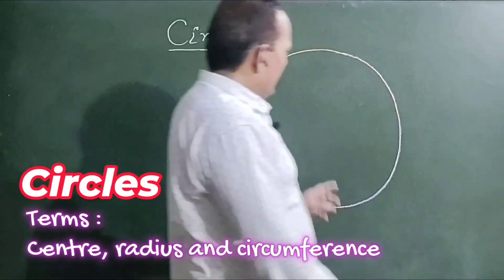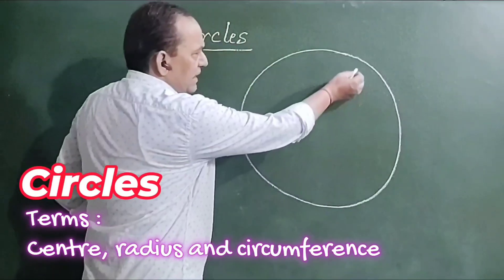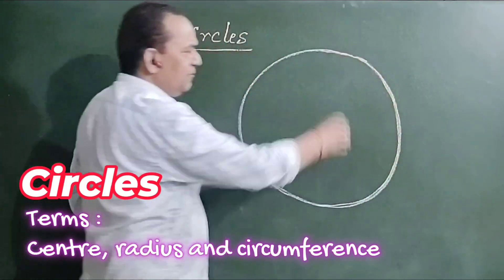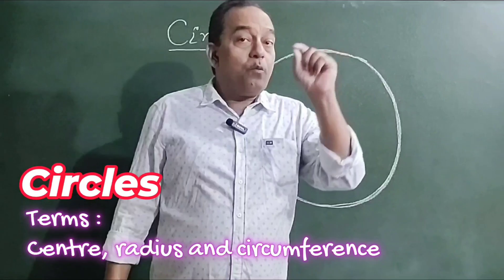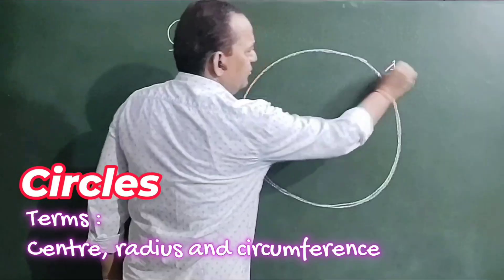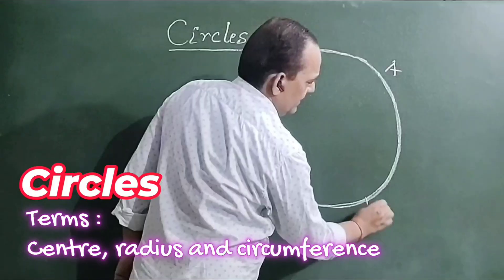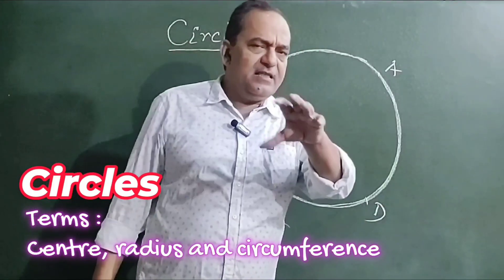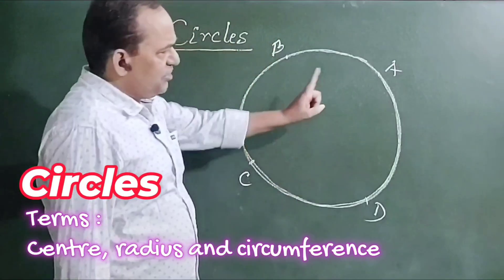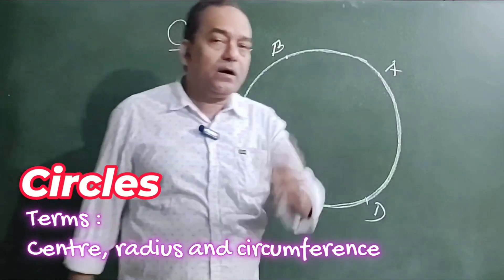So this is a circle, and there is a point inside this curved line. From that point, the distance to points A, B, C, and D are equal. There is a point in the interior of this circle, and from that point the distances to A, B, C, and D are all equal.